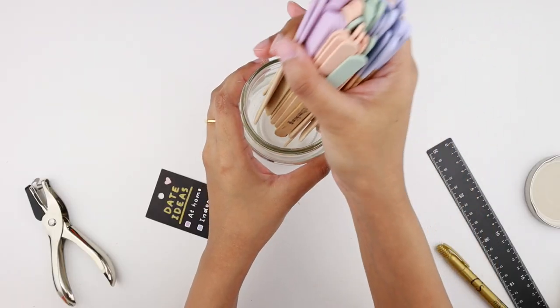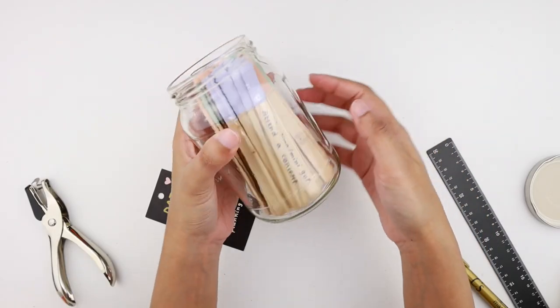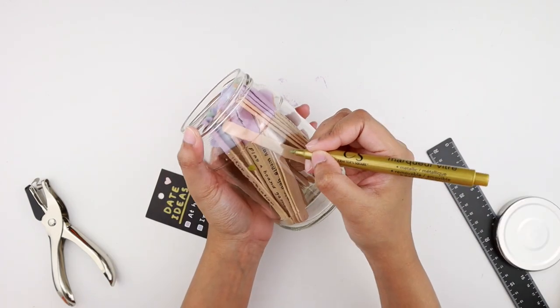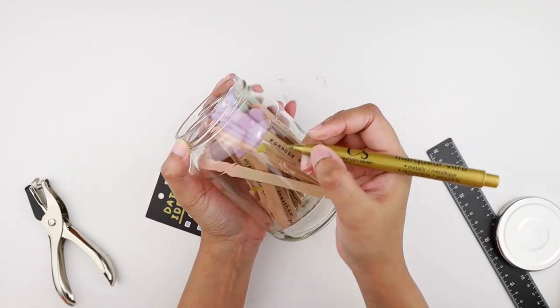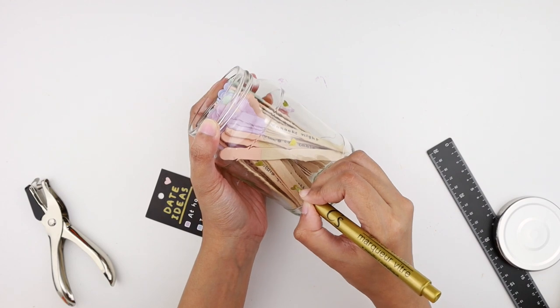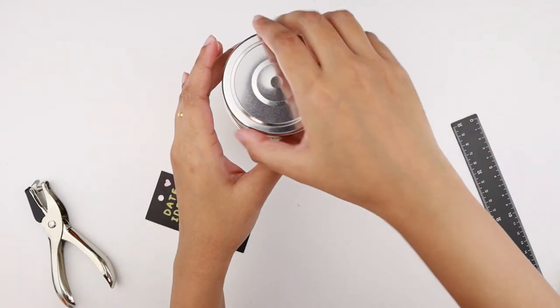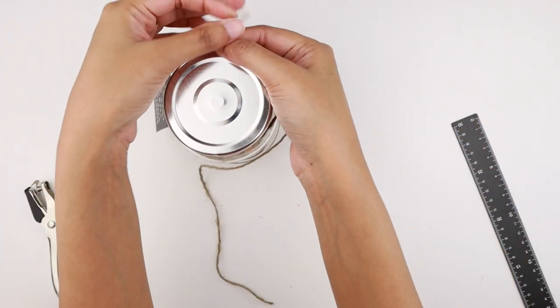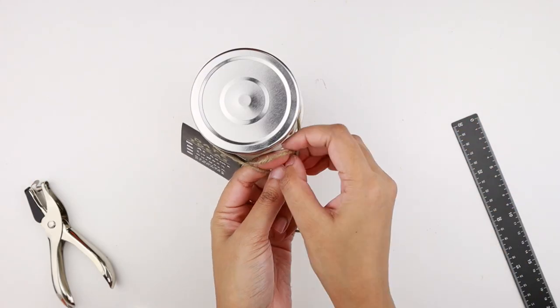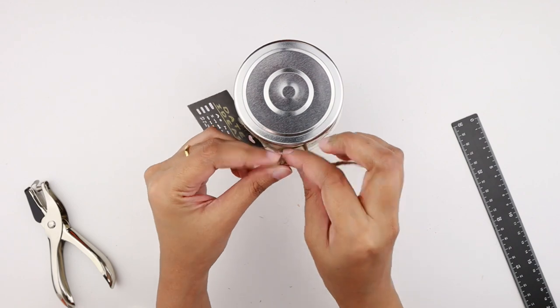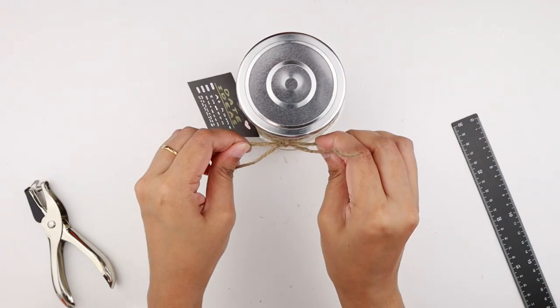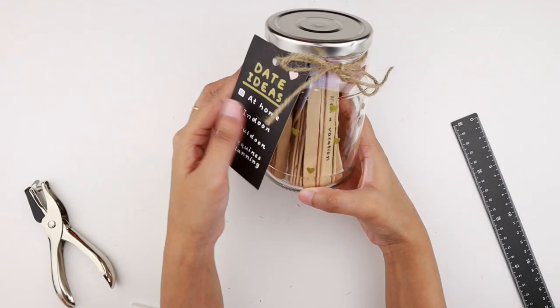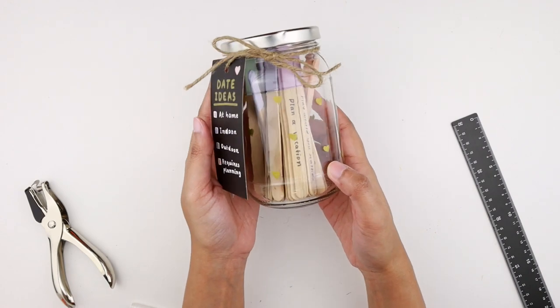I opened the jar and filled it with the craft sticks, and also made sure the painted sides were facing up. To spruce up the jar a little bit, I took a gold glass writer and painted tiny hearts on it. To finish off, I cut a piece of twine, put one of the ends through the tag, wrapped it around the neck of the jar, and tied a bow knot. This completes our date ideas jar, which is a great gift option for your loved one.